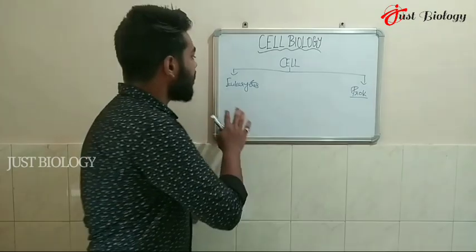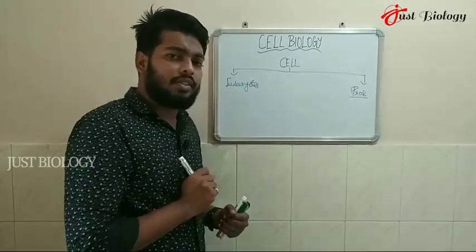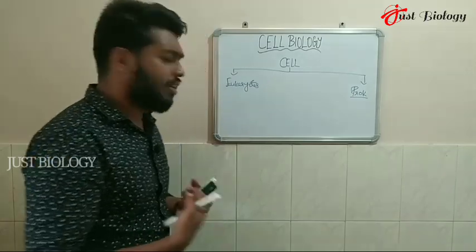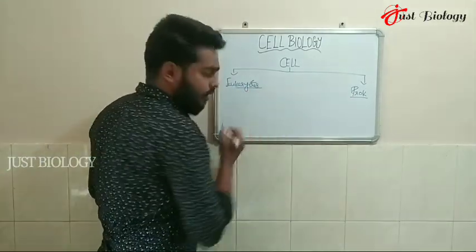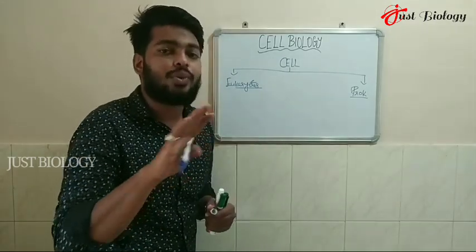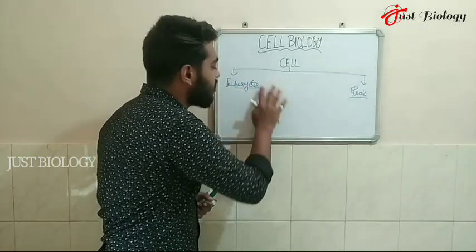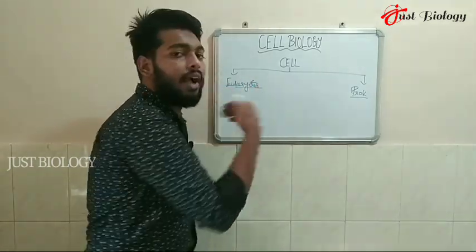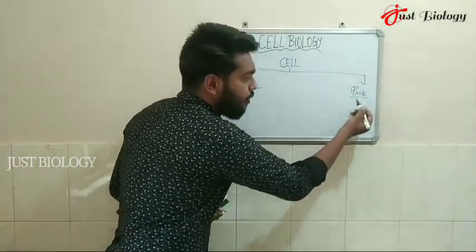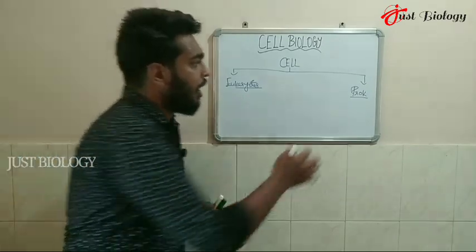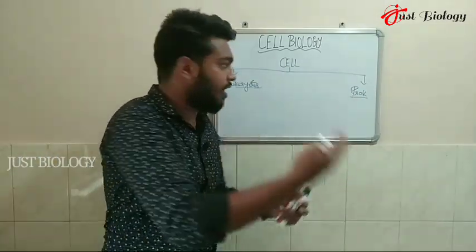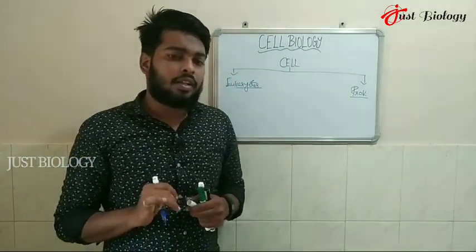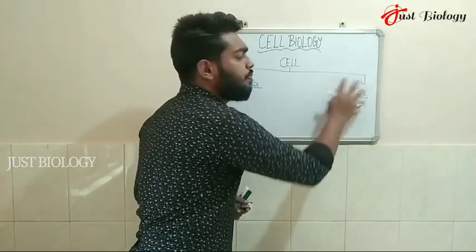The term 'eukaryote' comes from Greek — 'eu' means true and 'karyon' means nucleus, so eukaryotes are cells that truly have a nucleus. 'Prokaryote' means 'before the nucleus' — 'pro' meaning primitive or before, and 'karyon' meaning nucleus. So prokaryotes are cells that exist before or without a true nucleus.